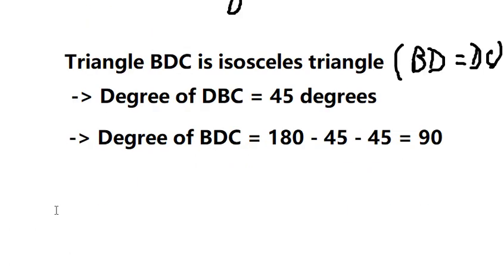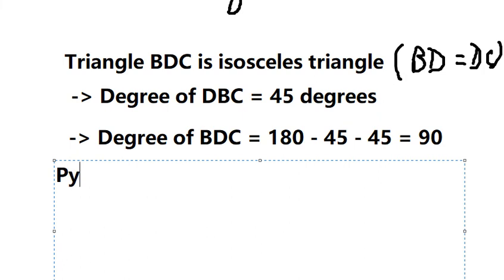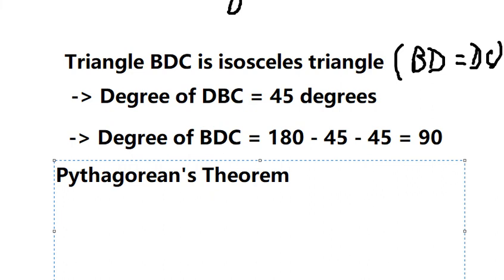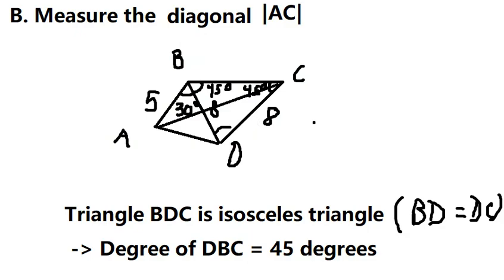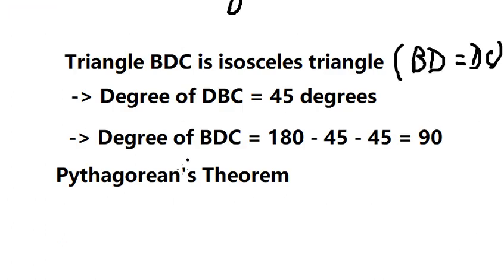Now we can use the Pythagorean theorem. We know BD is about 8 and DC is about 8. We can find BC using these values.